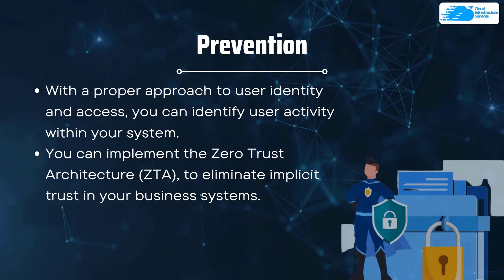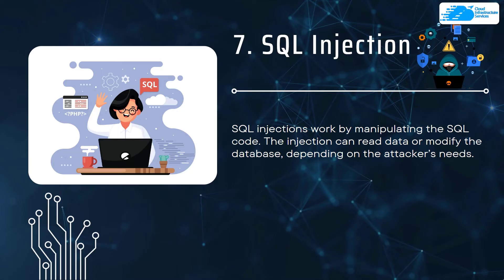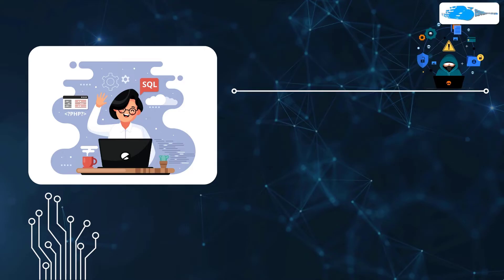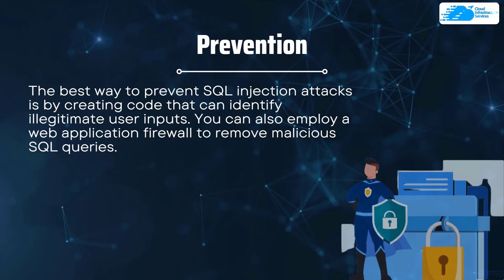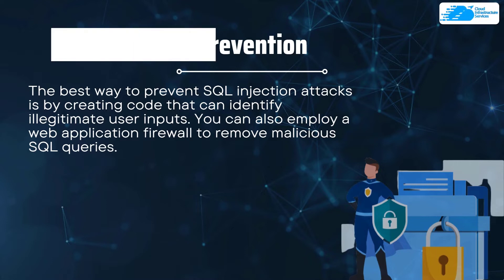You can implement a Zero Trust Architecture (ZTA) to eliminate implicit trust in your business systems. Number seven is SQL injection, which works by manipulating SQL code — the injection can read data or modify the database depending on the attacker's needs. To prevent SQL injection, create code that identifies illegitimate user inputs and employ a web application firewall to remove malicious SQL queries.